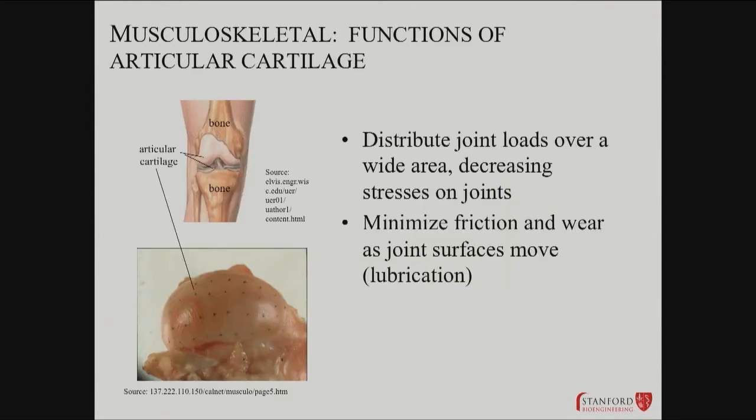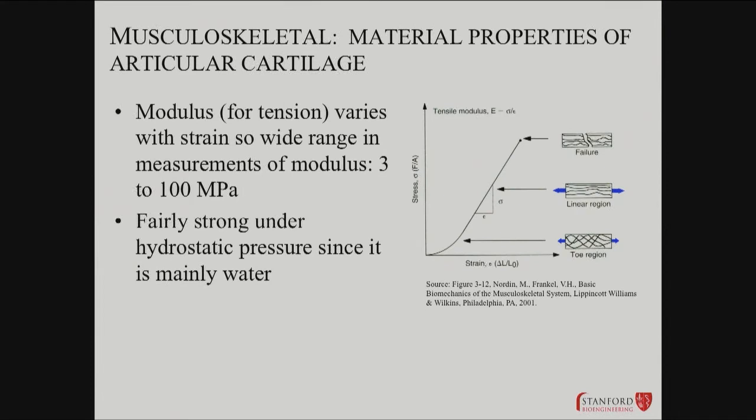You've got different kinds and they play different roles. Articular cartilage is designed to minimize friction and wear, and it distributes joint load over a wider area. It's really important, for example, in the knee — a very hard working joint. It's got very interesting material properties, including very strong hydrostatic pressure.